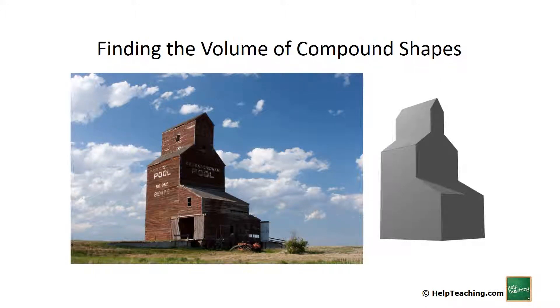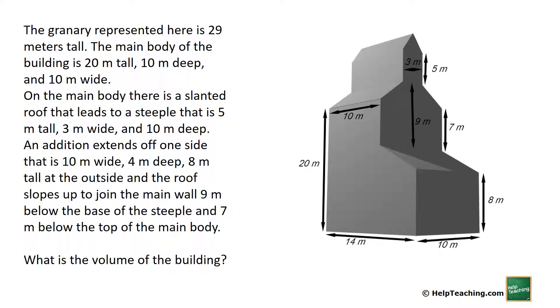A question might read something like this: The granary represented here is 29 meters tall. The main body of the building is 20 meters tall, 10 meters deep, and 10 meters wide. On the main body there is a slanted roof that leads to a steeple that is 5 meters tall, 3 meters wide, and 10 meters deep.